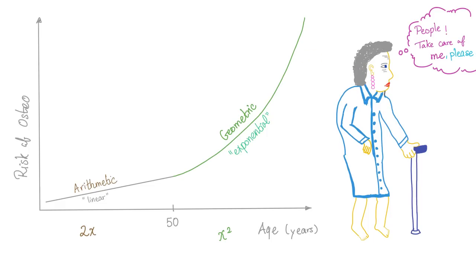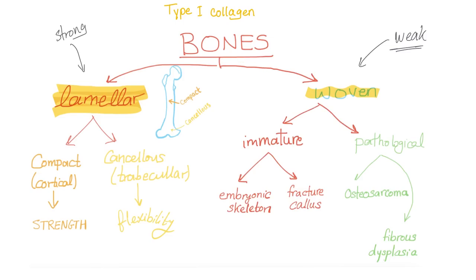Osteoarthritis, especially primary osteoarthritis, is a disease of the elderly — your chances of getting it shoot up exponentially as you get older. Let's talk about bones. They have type 1 collagen. We have two types of bones: lamellar and woven.